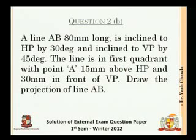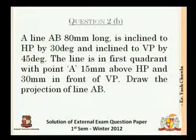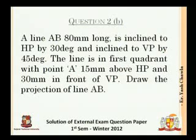Okay, the next question. This question we'll be solving after the break, so I'll just read out the question to you. A line AB 80 mm long is inclined to HP by 30 degrees and inclined to VP by 45 degrees. The line is in first quadrant with point A 15 mm above HP and 30 mm in front of VP. Draw the projection of line AB. So this solution will be using the slideshow, will just begin at 1 o'clock so that you can have a small break and then come back. We'll be solving four more questions after this in the next one hour. So be with us.